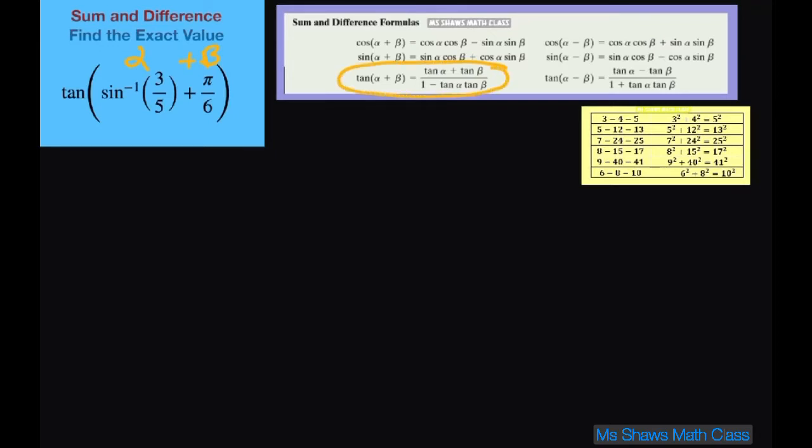So basically what I need is I need my tan of alpha and my tan of beta. That's all I need. So for my alpha, let's look at that. We have sine of alpha. If I rewrite this equals three-fifths. These are in quadrant one, both of these. So everything will be positive.